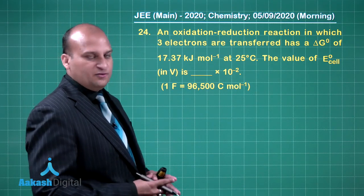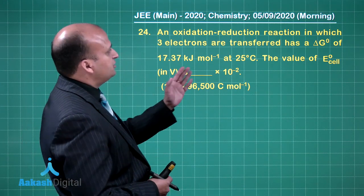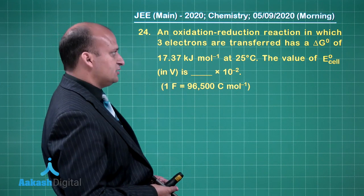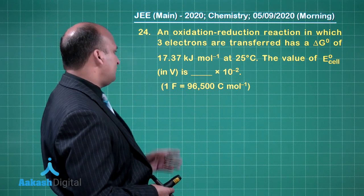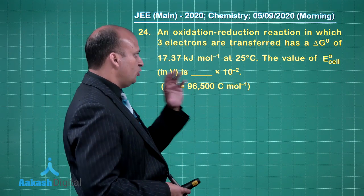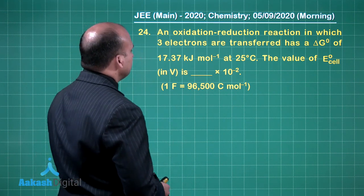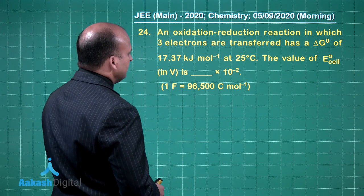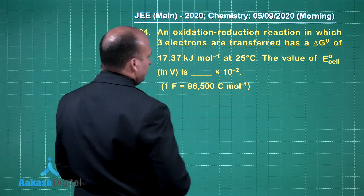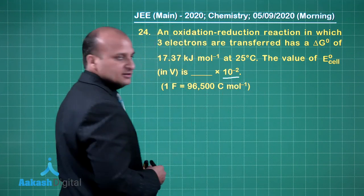Now let us look at question number 24. An oxidation-reduction reaction in which 3 electrons are transferred has a ΔG° of 17.37 kilojoules per mole at 25 degrees Celsius. The value of E°cell in volts is to be expressed as times 10 to the power minus 2.